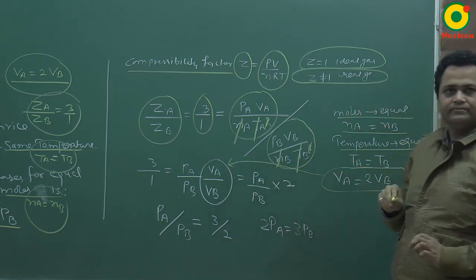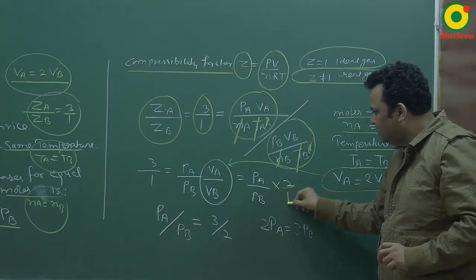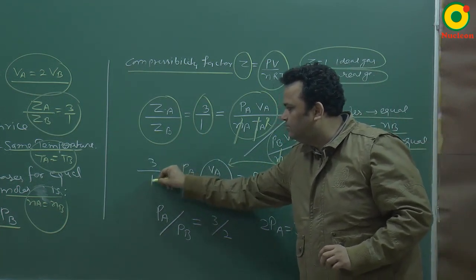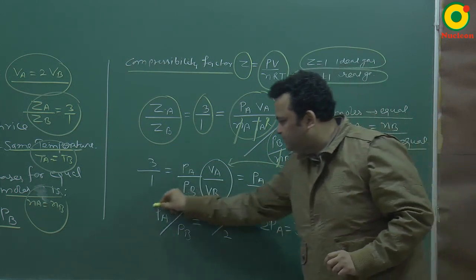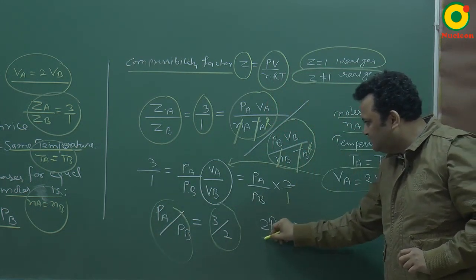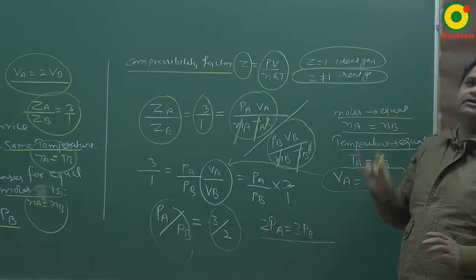Volume? VA is equal to 2VB. I have kept it. How much is it? 2 by 1. So PA upon PB into 2 is equal to 3 upon 1. Solving, PA upon PB is coming as 3 by 2, and the answer is 2PA is equal to 3PB.